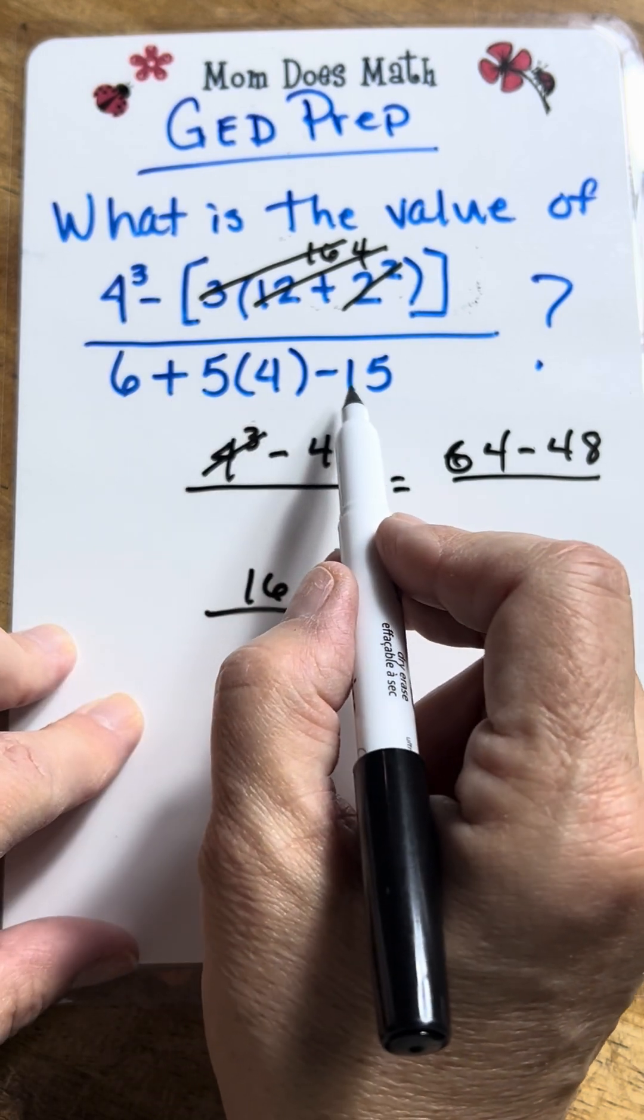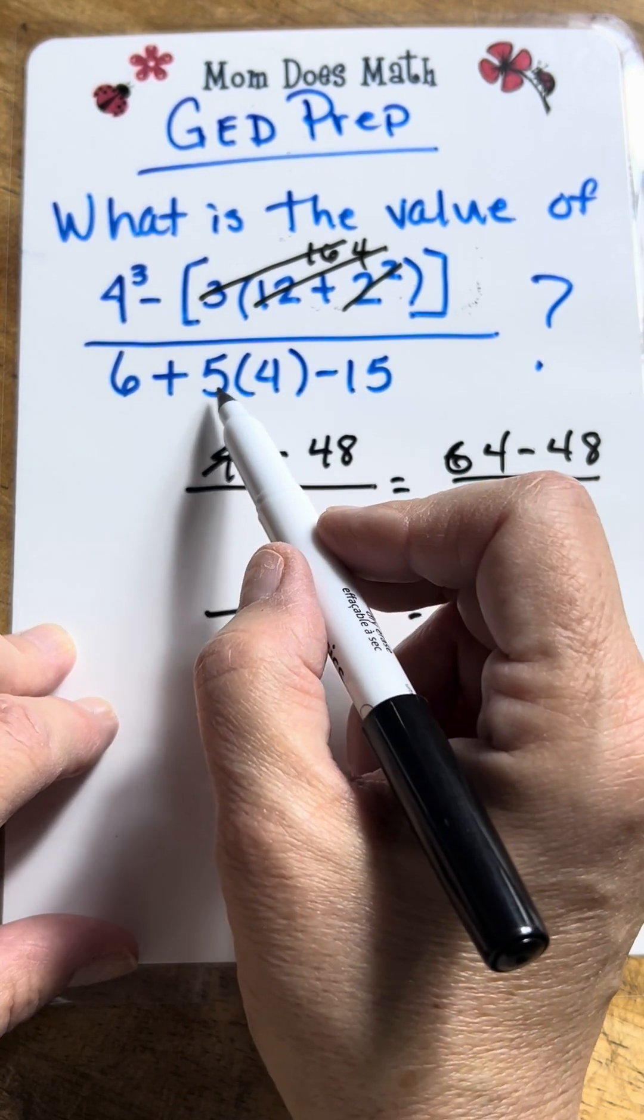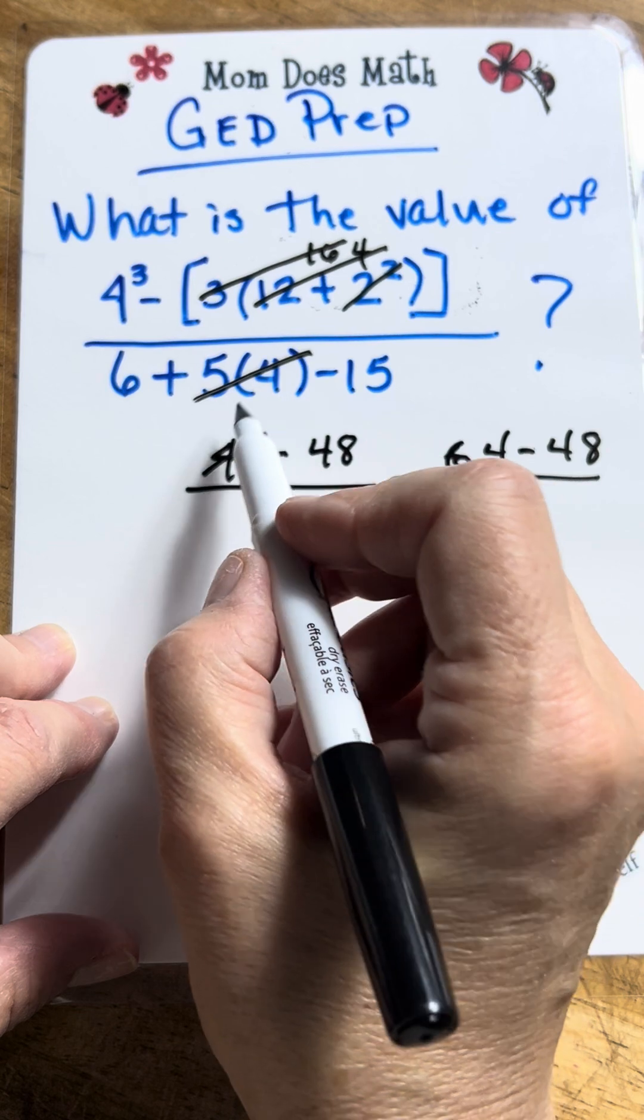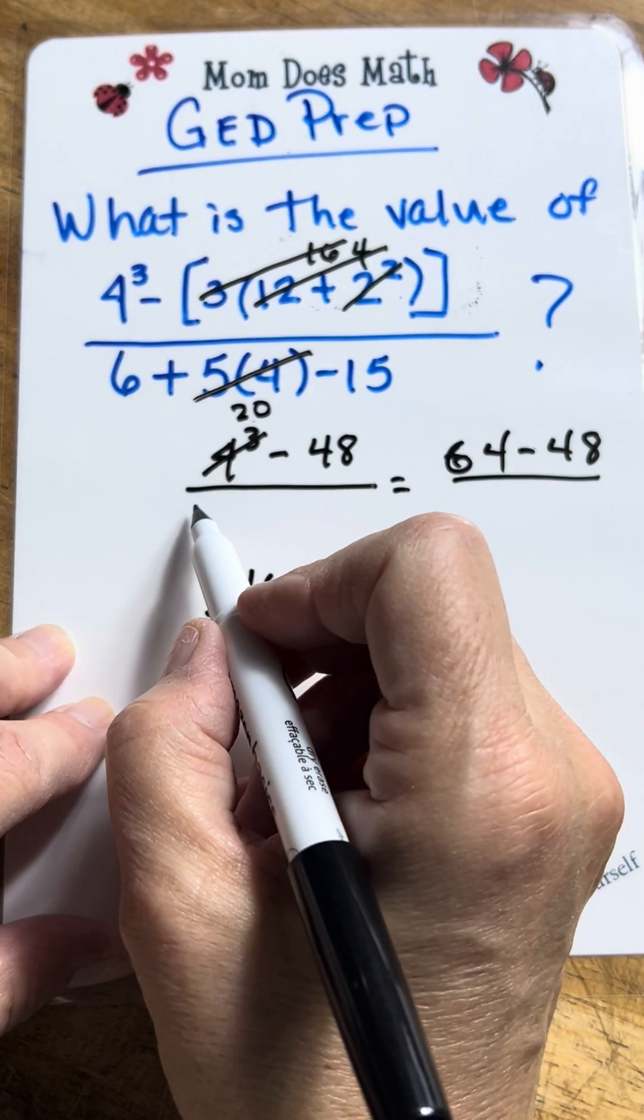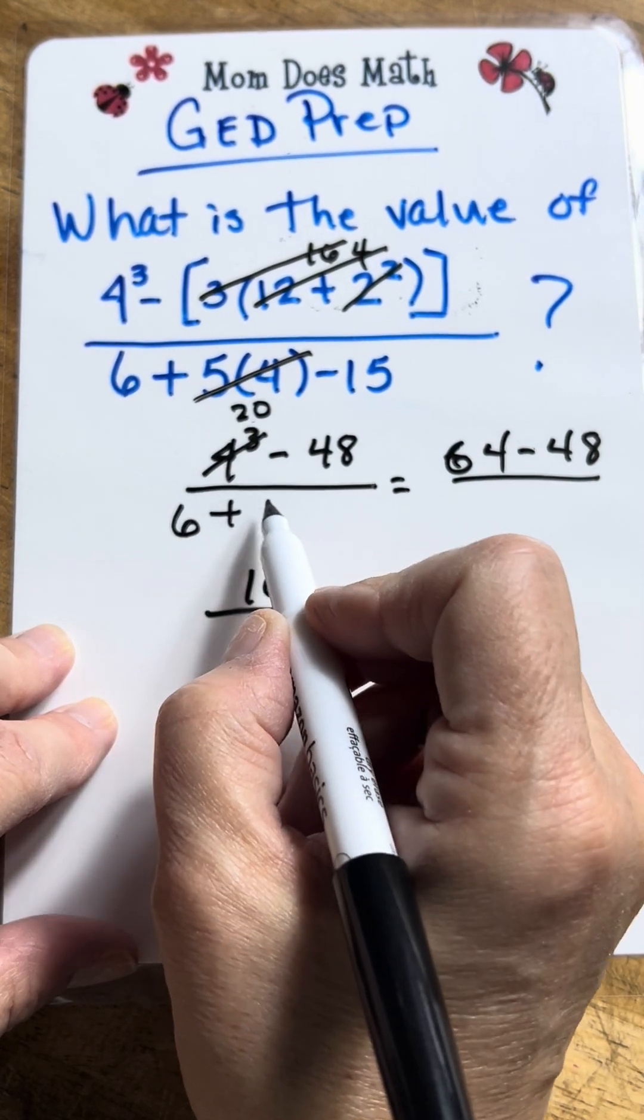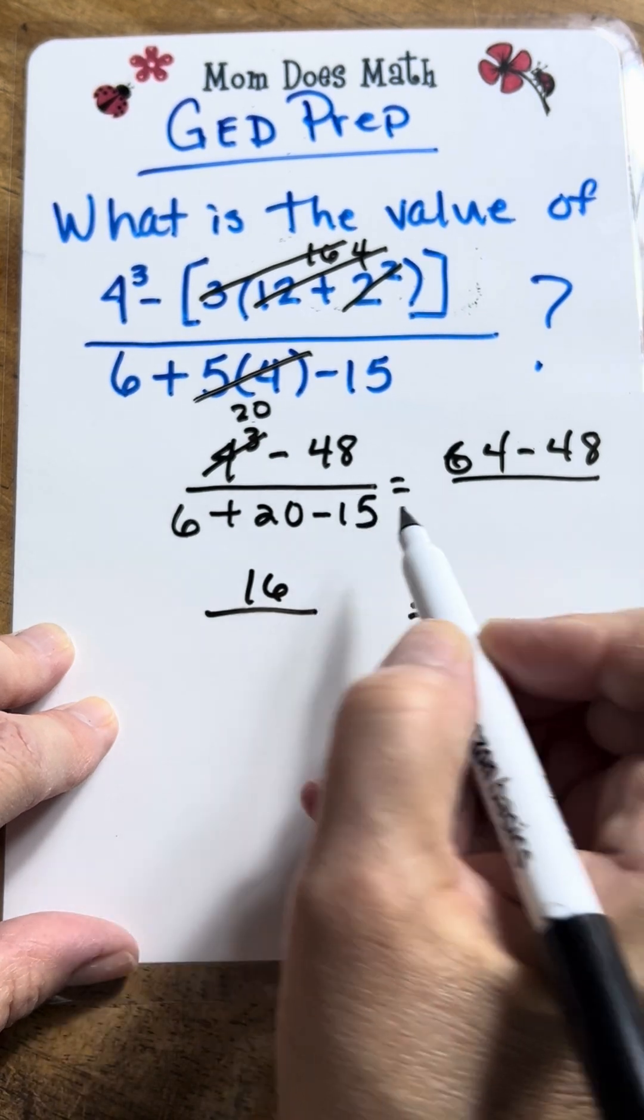So, now let's go take care of the denominator. Do multiplication first. 5 times 4 is 20. So, now what you have is 6 plus 20 minus 15.